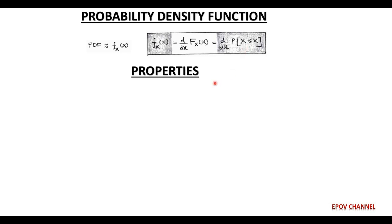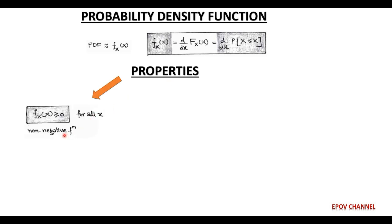Now we discuss the properties of the probability density function, or PDF. The first property is that PDF is always a non-negative function — that is, for all real values x, small f(x) is always greater than or equal to 0.